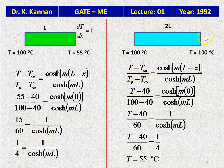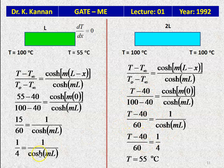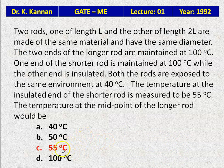For the longer rod of length 2L, the midpoint is at x = L. Applying the same formula: (T − T∞)/(T₀ − T∞) = cosh[m(2L − L)] / cosh(m·2L). Since the rod has twice the length, cosh(m·2L) can be evaluated, but by symmetry of the problem the midpoint temperature uses the same mL relationship. Substituting: (T − 40)/60 = 1/cosh(mL) = 1/4. Solving: T − 40 = 15, so T = 55°C. The correct answer is 55°C.